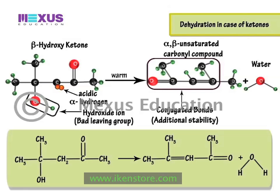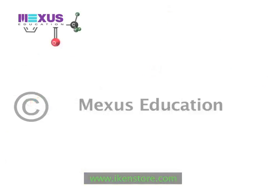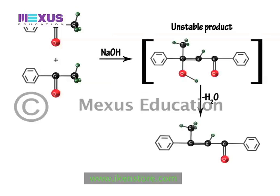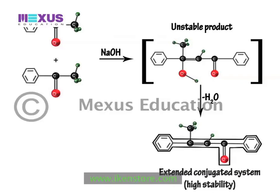Although the leaving group is a hydroxide ion, which is a poor leaving group, in some cases — especially when the double bond produced is conjugated with an aromatic ring — dehydration of the aldol product occurs so readily that we cannot isolate the product in the aldol form. The extended conjugated system makes the product highly stable.